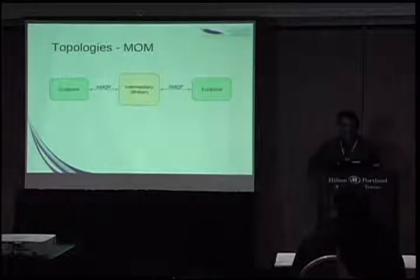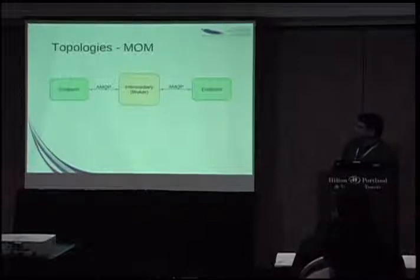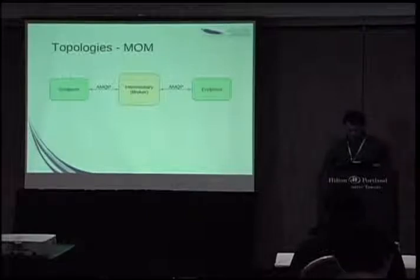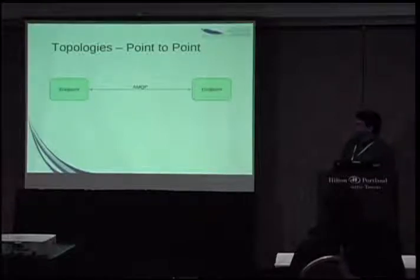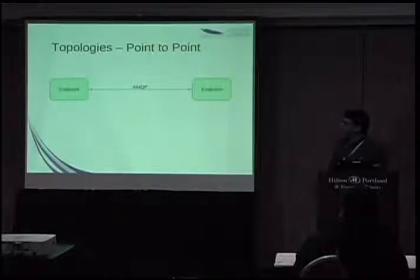Switching gears to topologies: if you're a messaging person, you understand the typical MOM topology where I've got endpoints speaking AMQP and they are interacting through an intermediary broker. The broker stores and forwards messages according to queues, topics, or some routing algorithm. In AMQP, I have the option of dropping that intermediary and going straight point-to-point — you could think of this as using AMQP as a drop-in replacement for a different protocol like HTTP. One endpoint acts as a server accepting incoming connections; the other acts as a client initiating outgoing connections. In both cases, the transfer between endpoints follows the rules of AMQP and gets the benefits of that protocol.